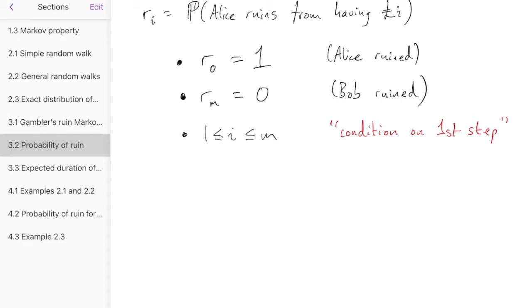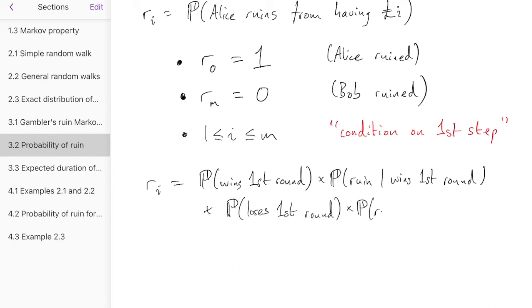So the idea is to look at R_i and say, what happens in the first round of the game? Either Alice will win that first round, or she'll lose that first round. So we can write that the probability of ruin is the probability Alice wins the first round times the probability of ruin given she wins the first round, or she loses the first round, in which case we want to know what's the probability she ruins given she loses the first round.